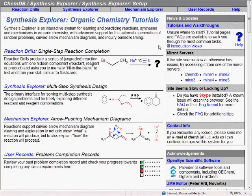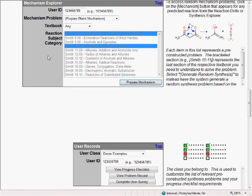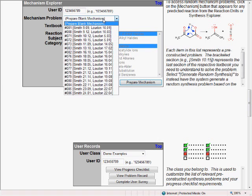Similar to the synthesis problems, there are also a set of non-random mechanism problems that you can work on, which can be accessed by going to the Mechanism Explorer section of the Setup screen and selecting a problem from this list.